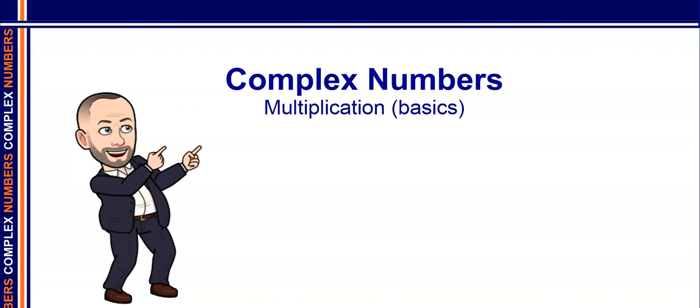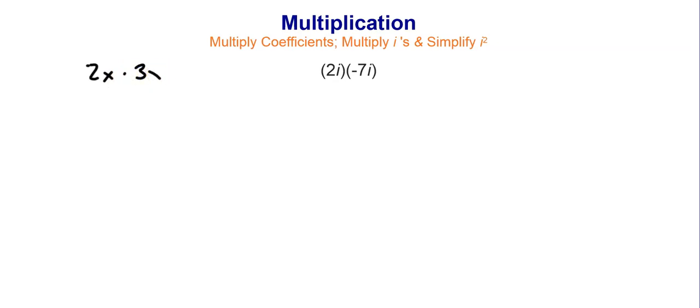Welcome back. We're going to continue our study of complex numbers by looking at multiplication. When you do multiplication with complex numbers, it's almost like when we multiplied polynomials or variables in Algebra 1. For instance, in Algebra 1, we sometimes multiplied something like 2x times 3x — we'd multiply coefficients (2 times 3 is 6) and then multiply variables (x times x is x squared). It's very much like that with complex numbers, however we have to worry about one tiny part towards the end, which I'll get to in my first example.